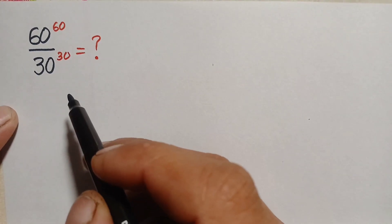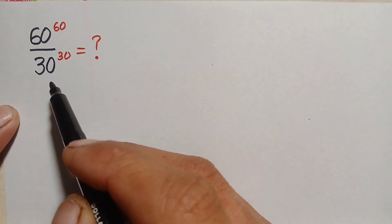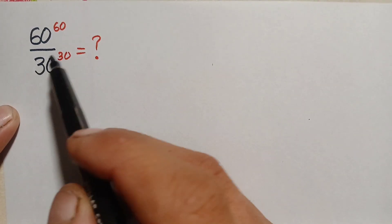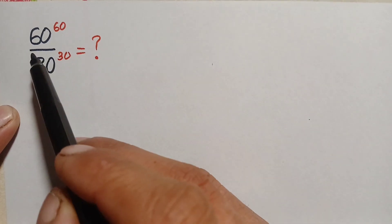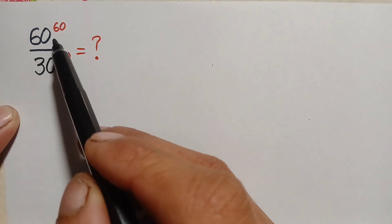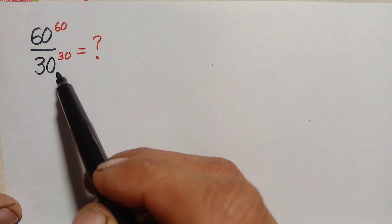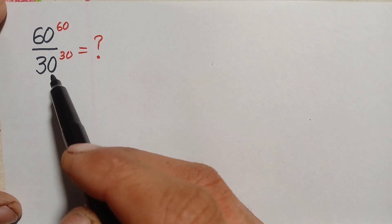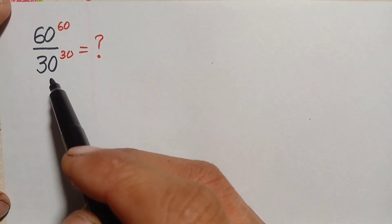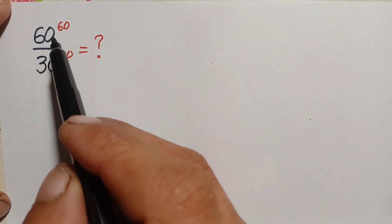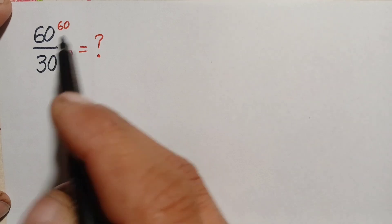Hello everyone, you are welcome. Today we will solve and find the value of this interesting exponential math problem: 60 raised to power 60 divided by 30 raised to power 30. I will try to solve this problem using two different methods.